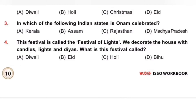Question 4: This festival is called the festival of lights. We decorate the house with candles, lights and diyas. What is this festival called? Options: A. Diwali, B. Eid, C. Holi, D. Bihu. Diwali is called the festival of light. During Diwali, we decorate the house with candles, lights and diyas. Option A is the correct answer.